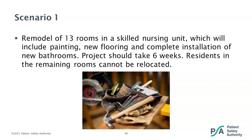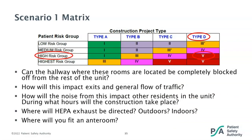We'll now run through some scenarios to show real-world examples of how to apply the ICRA 2.0 tool. In our first scenario, we have the remodel of 13 rooms in a skilled nursing unit, which will include painting, new flooring, and complete installation of new bathrooms. The project should take six weeks. Residents in the remaining rooms cannot be relocated and will remain in the unit. Key points here are multiple rooms being remodeled for an extended period of time, and residents within the same unit will not be relocated. This would be classified as Type D, with major demolition and construction activities taking place in two or more rooms, in a resident care area — making our risk group high risk. With this information, we know this project requires Class V precautions.